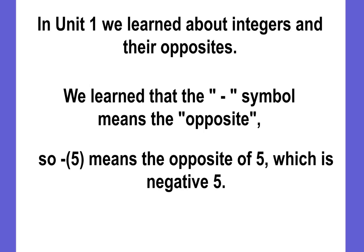In unit 1, we learned about integers and their opposites. We know that integers include all of the whole numbers, which are positive numbers, and their opposites — so they include the negative whole numbers. We learned that this symbol here, that looks like a minus sign, actually means the opposite, or a negative. So if you write this symbol in front of the number 5, it means the opposite of 5, which is negative 5.